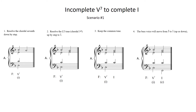Finally, the bass voice will move inevitably from scale degree 5 to scale degree 1. Notice that while the V7 chord was incomplete, the tonic triad is complete with the familiar voicing of a doubled chordal root, a chordal 3rd, and a chordal 5th.